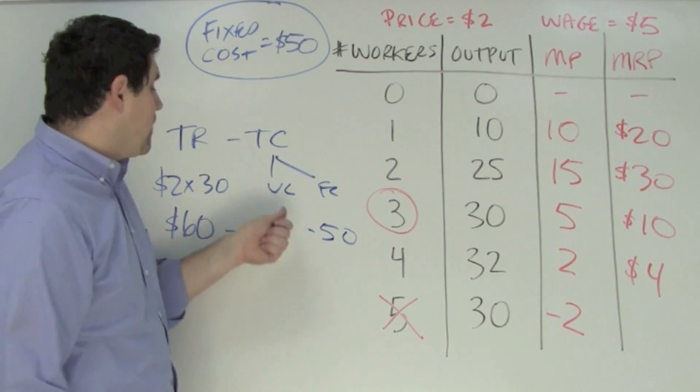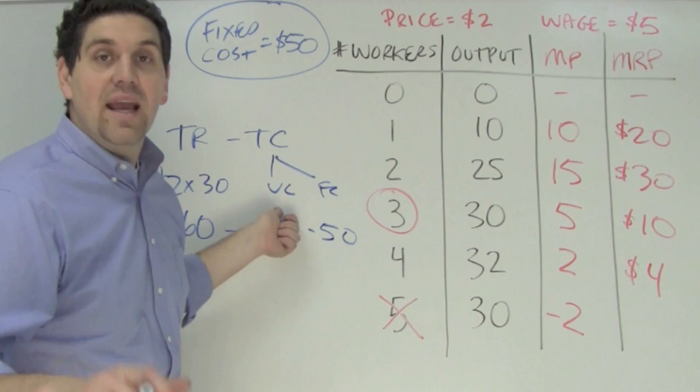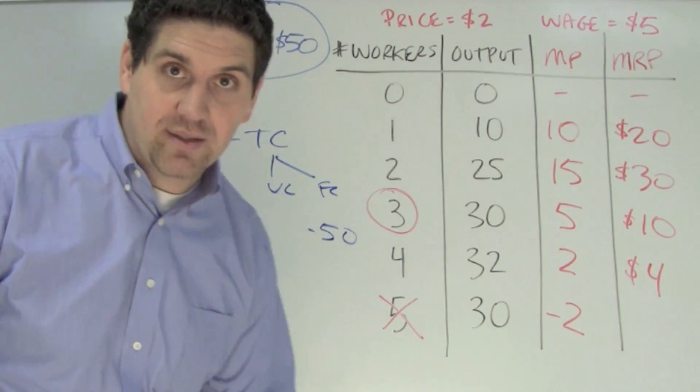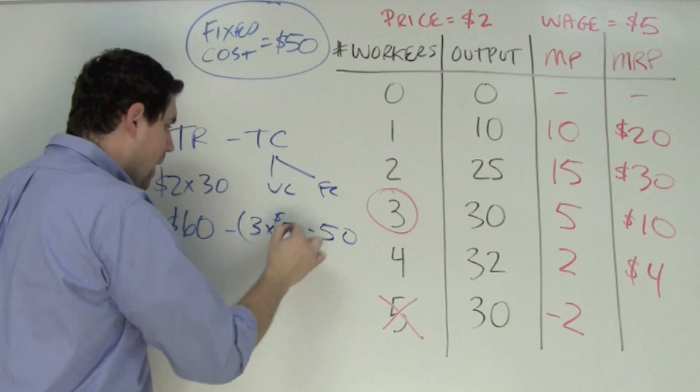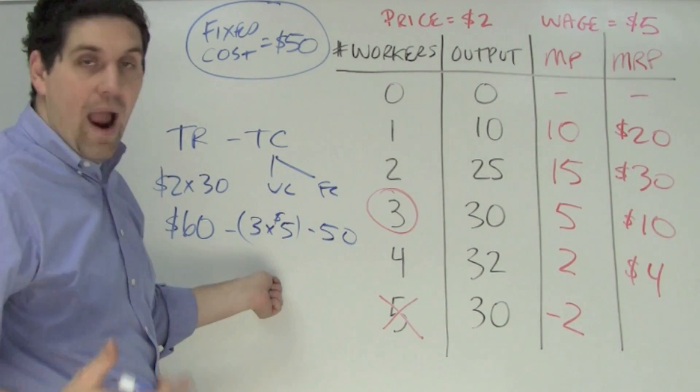So we've got to subtract that out. But we also have to calculate the variable cost. In this case, the variable cost is all labor costs. So I hired three workers times the fact I paid each one $5 represents the labor cost of hiring workers.